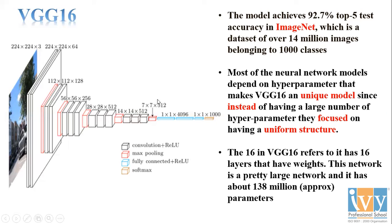Since VGG16 is already pre-trained, its efficiency is definitely high. In the simple CNN model, the validation accuracy was around 55%, which is no better than a random guess. VGG16, on the other hand, achieved a validation accuracy of 94%, clearly showing that the pre-trained model outperforms the simple CNN model.